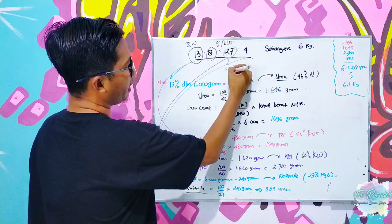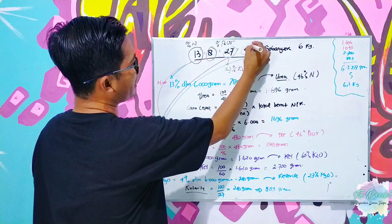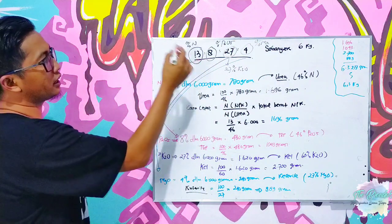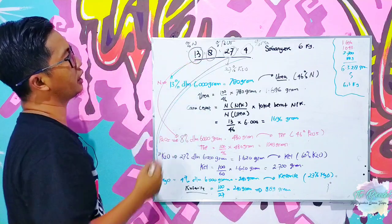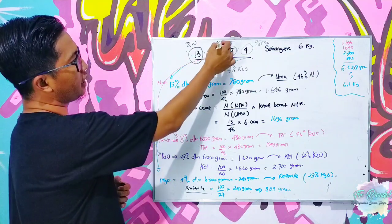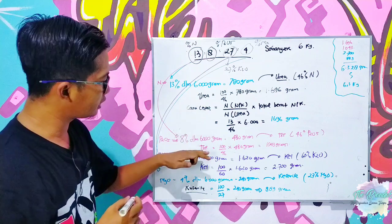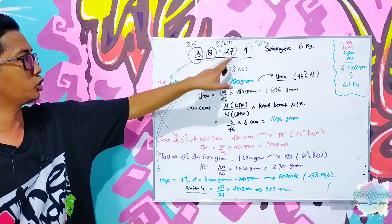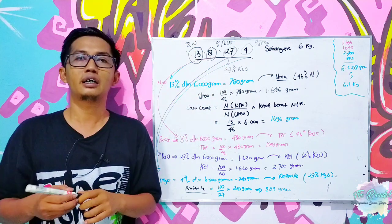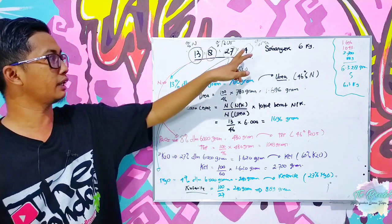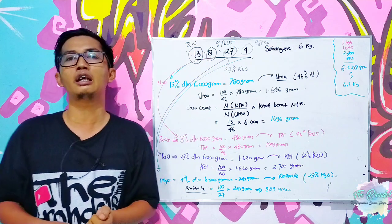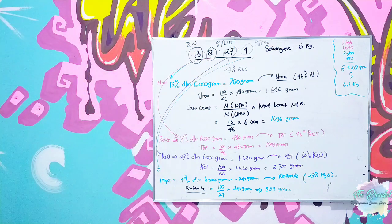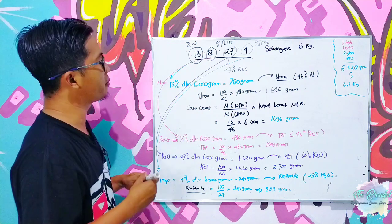Seperti dalam penjelasan sebuah namanya NPK, bahwa 13 adalah persen nitrogennya, 8 persen P2O5-nya, 27 persen adalah K2O-nya, dan 4 persen ini adalah persen magnesium oksidanya. Dimana bahwa nitrogen akan kita ganti menggunakan urea sebagai sumber nitrogennya, kemudian pospatnya kita masuki TSP, kemudian 27 persen K2O ini akan kita masuki dengan menggunakan KCL, dan 4 persen magnesium oksidanya kita suplai menggunakan kiserit.